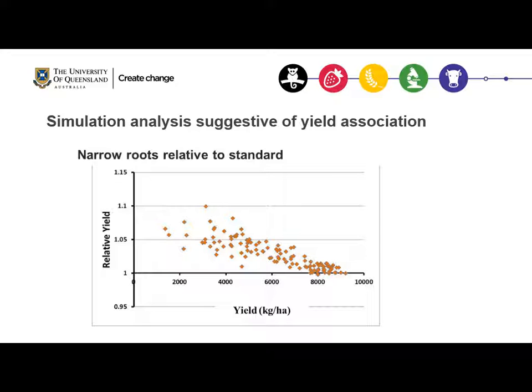This graph shows results from crop simulation studies. There is an increase in relative yield for the narrow angle line compared to standard cultivars for yields varying from 2000 to 9000 kg per hectare. There is an increase in yield in the presence of the narrow angle line especially under low-yielding environments, but no yield penalty under high-yielding environments.